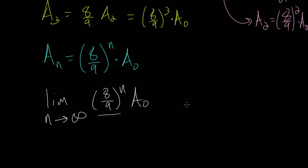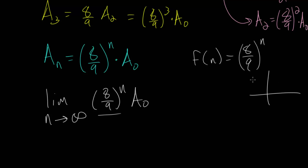This is an exponential expression where the base is smaller than one. When you raise fractions less than one to higher and higher exponents, the result approaches zero. If the base were greater than one, raising it to higher powers would approach infinity — but since the base is less than one, if we graph this as a function of n, it shows exponential decay, decreasing as n increases and approaching zero as n gets bigger and bigger. So this expression approaches zero, and the original area is just a constant.